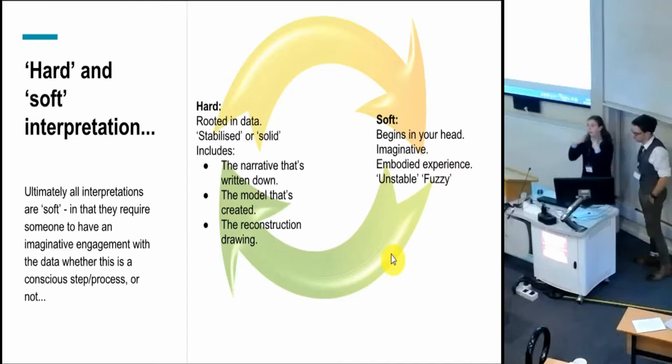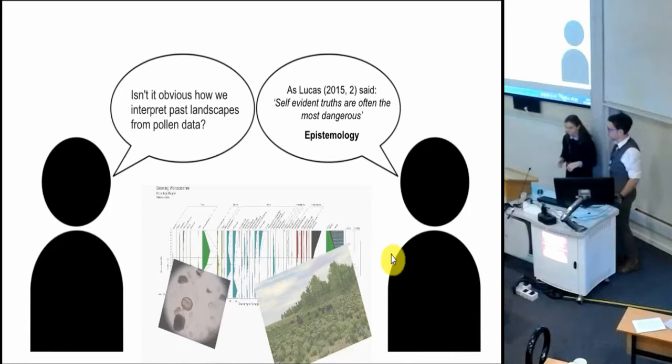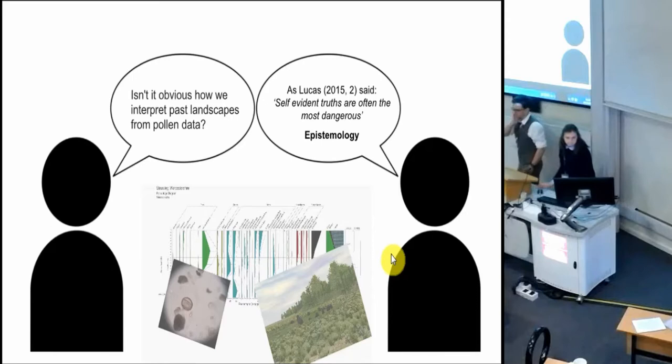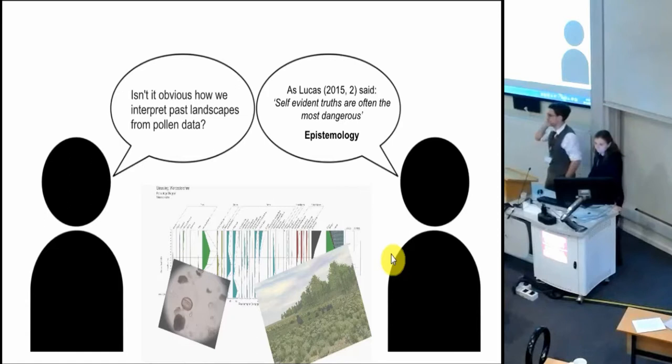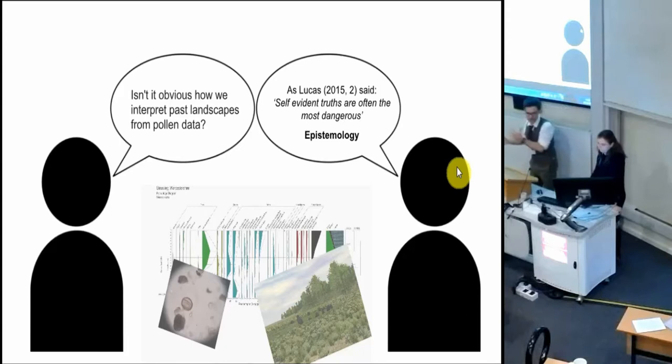There are different ways of us imagining that. I suppose this is coming around in a loop - if you're not a paleoecologist, or if you use paleoecological data, you might expect that it's obvious how we interpret pollen diagrams, and that we have huge amounts of information about past woodlands and past environments. That's not necessarily the case. We know more about some things than other aspects of past landscapes. Underpinning this is a kind of problem - or issue - with paleoecology: that it's obvious how we interpret data. Lucas's quote: self-evident truths are often the most dangerous. So I wander through this subject towards ideas of epistemology.